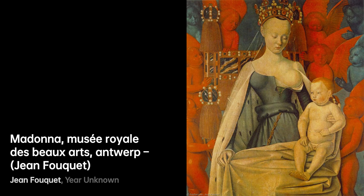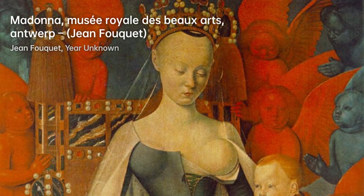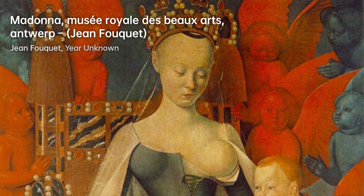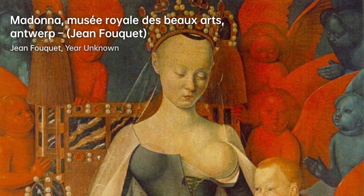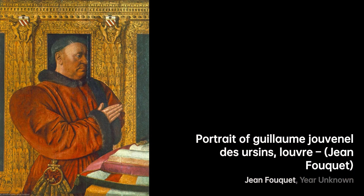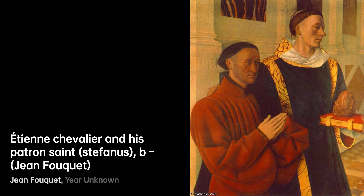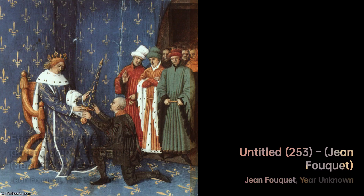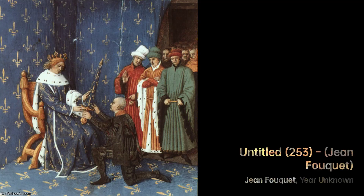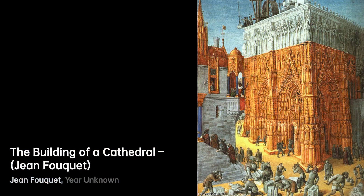Fouquet's talent gained recognition from the French court, and he had the privilege of working for influential figures such as Charles VII, Etienne Chevalier, and Guillaume Juvenal d'Ursins. His paintings captured the essence of his subjects, showcasing their importance and contributing to the court's efforts to establish a distinct French identity.